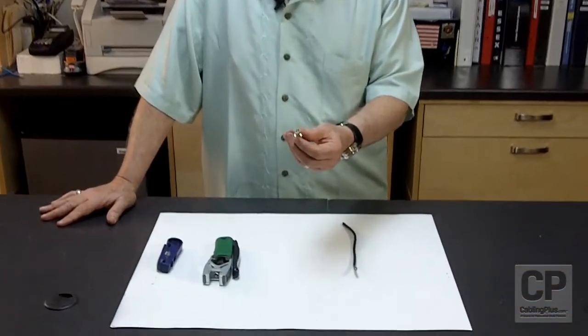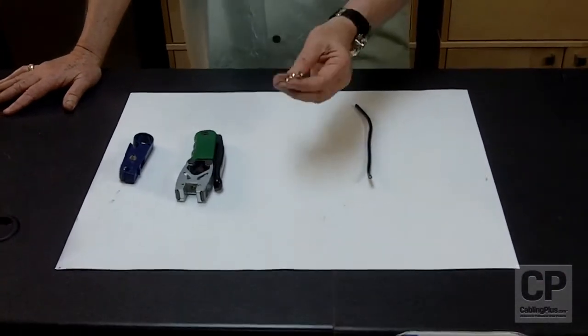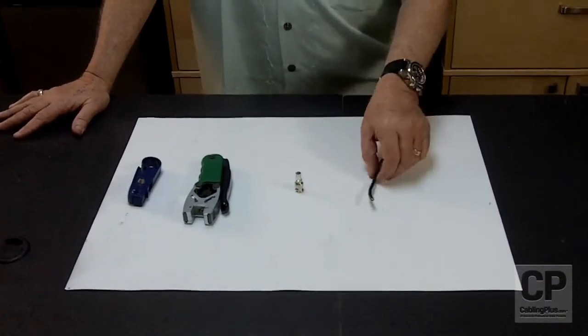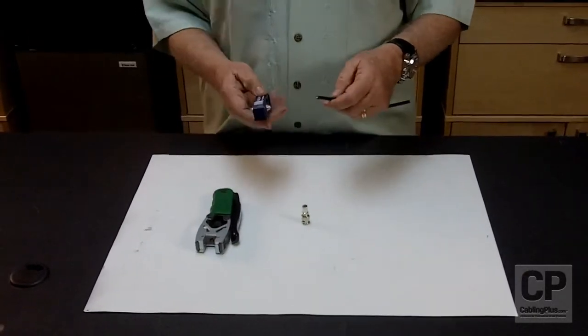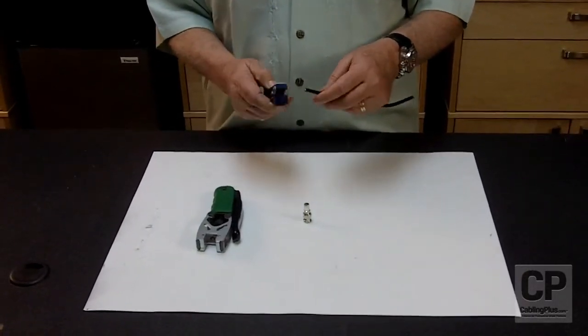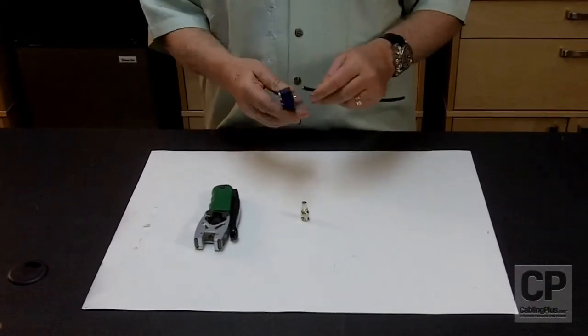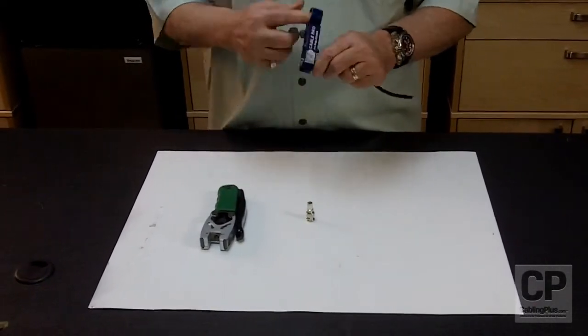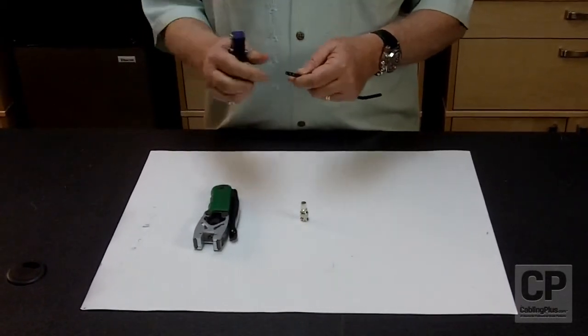The particular connector I'm going to be installing today is the DB59 BNC connector. It's called the double bubble connector. First thing you need to do is get yourself a good piece of RG59U cable, and then you want to prepare the cable for installing the connector. So we're going to strip the cable and help prepare it properly for the connector.